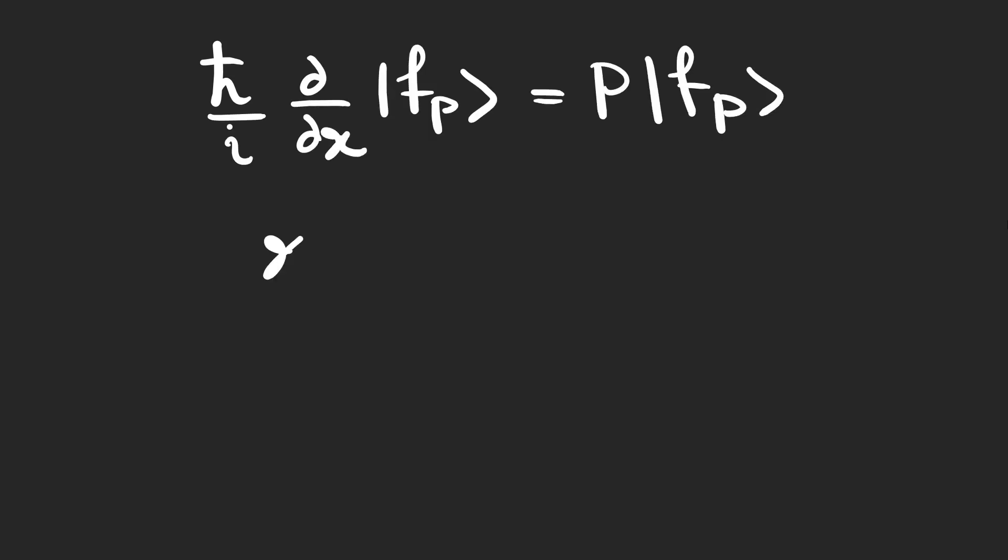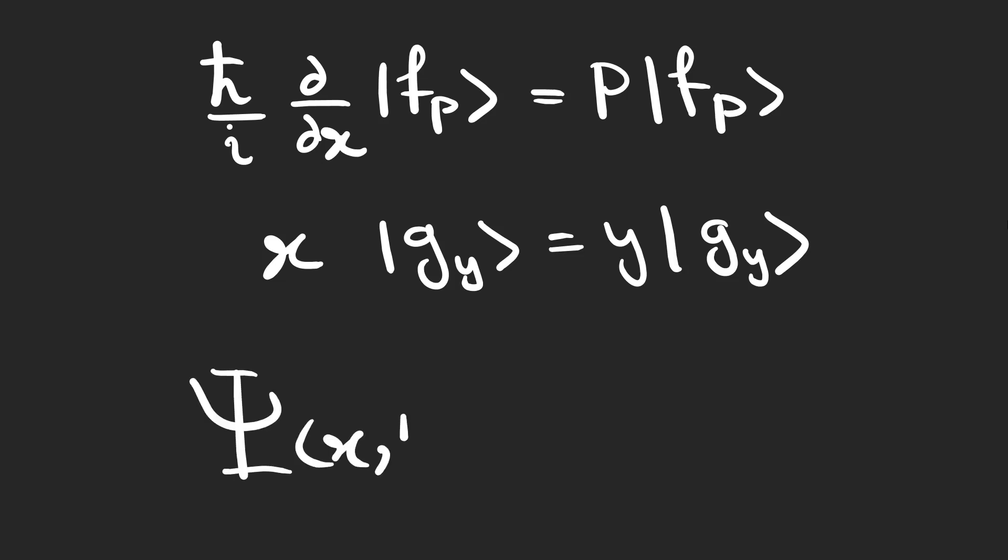In this video we are going to talk about the eigenvalues and eigenstates of momentum and position operators and introduce two spaces for wave function called momentum space wave function and position space wave function which are related using Fourier transforms.